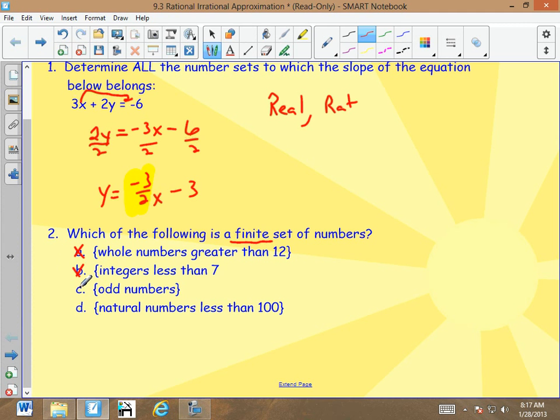Odd numbers. Do odd numbers ever end? No, they go forever and ever. Natural numbers less than 100. That's it. Natural are counting numbers. Less than 100. They start at 1. So if they're less than 100, they would end at 99. So your answer is D.